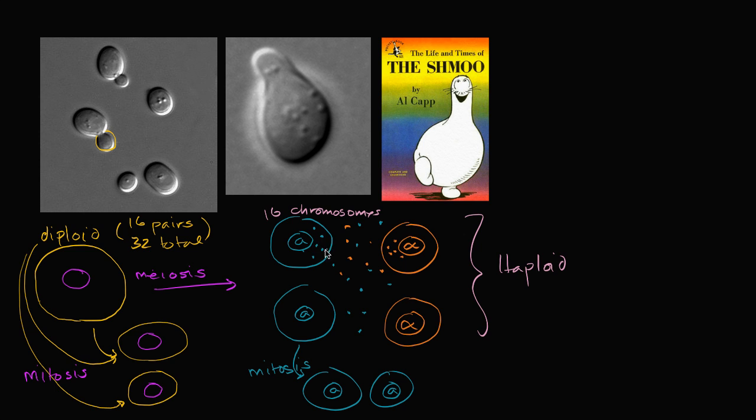And what happens is each type has receptors for the other types' factors. So the type A is going to have receptors for the type alpha, for the type alpha. And it's going to be in all over the outside of the cell. And the type alpha is going to have receptors for the type A. Receptors, let me do that in orange. It's going to have receptors for the type A.